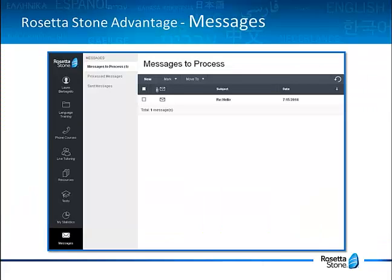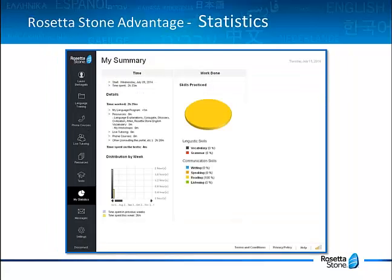The last additional service, depending on what the company has subscribed for you, is the possibility to write a message to your tutor. Click on Messages on the left toolbar to access the mailbox, where you will find all of the messages sent or received from your tutor. Throughout your training, you're able to check how much time you've spent in each section of your program, as well as the distribution per week, the skills practice, and your success rate — so much information to help you reinforce your training and select your next goals and objectives.